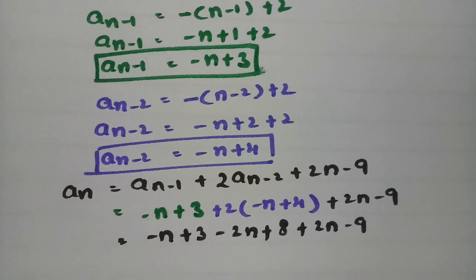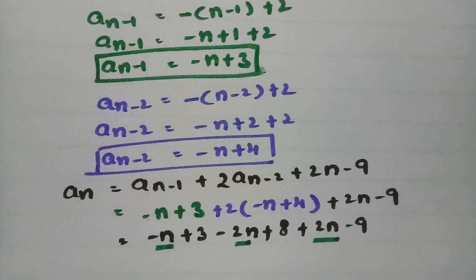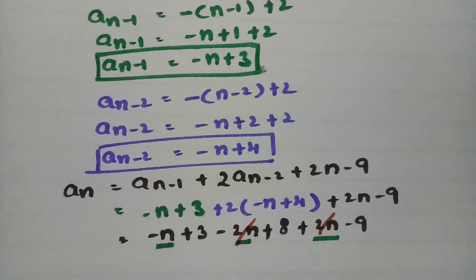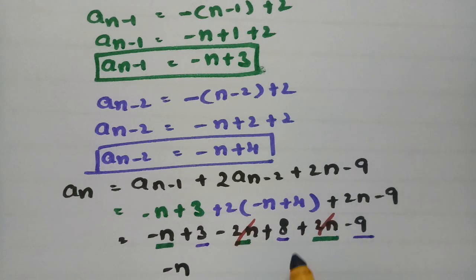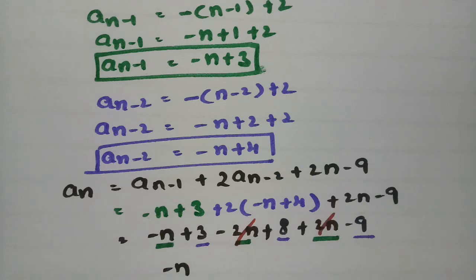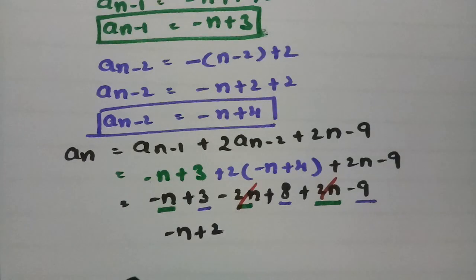Looking at the n terms: -n - 2n + 2n = -n. For the constants: 3 + 8 - 9 = 2. So the result is -n + 2, which is nothing but An. We started with An and got An back.